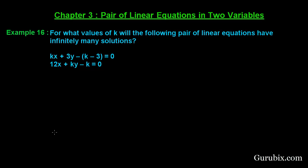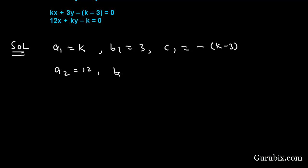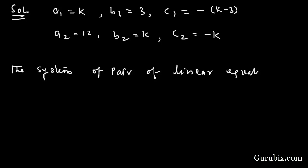So these are the two linear equations. In this pair of linear equations, a1 = k, b1 = 3, and c1 = -(k - 3). And a2 = 12, b2 = k, and c2 = -k.